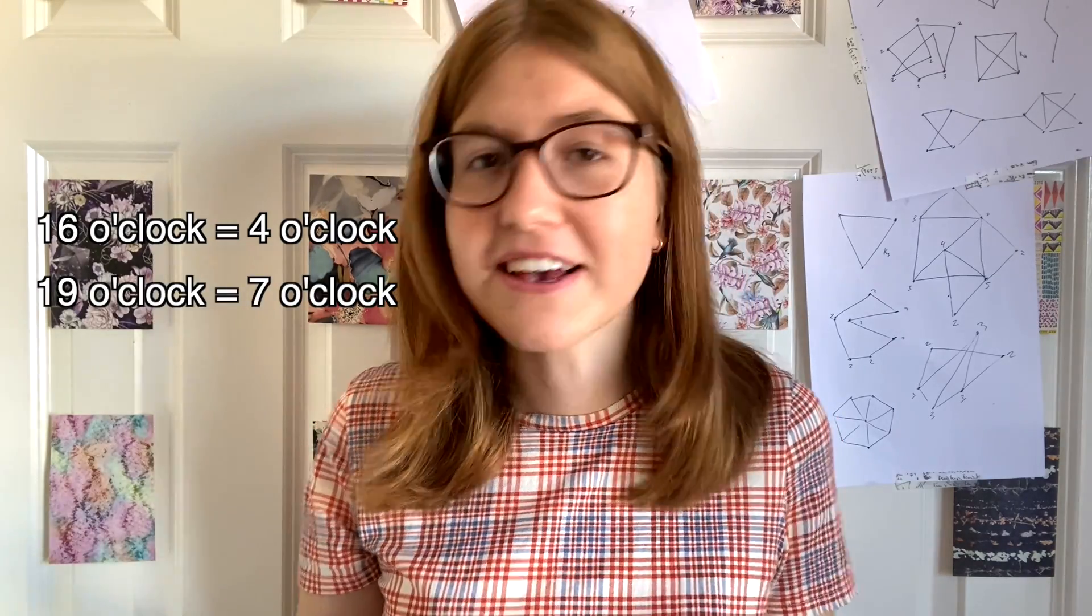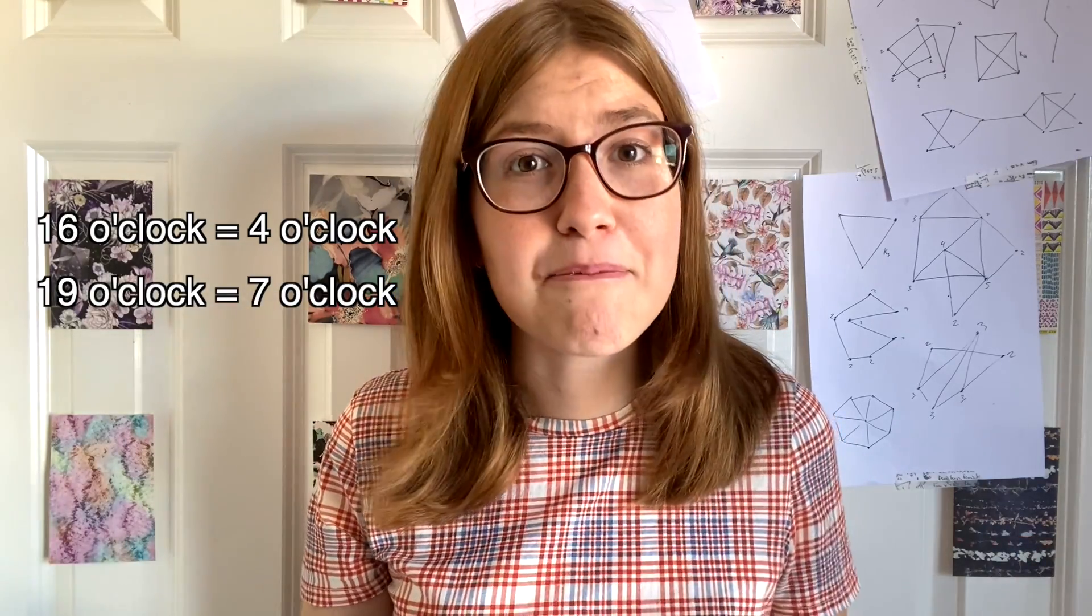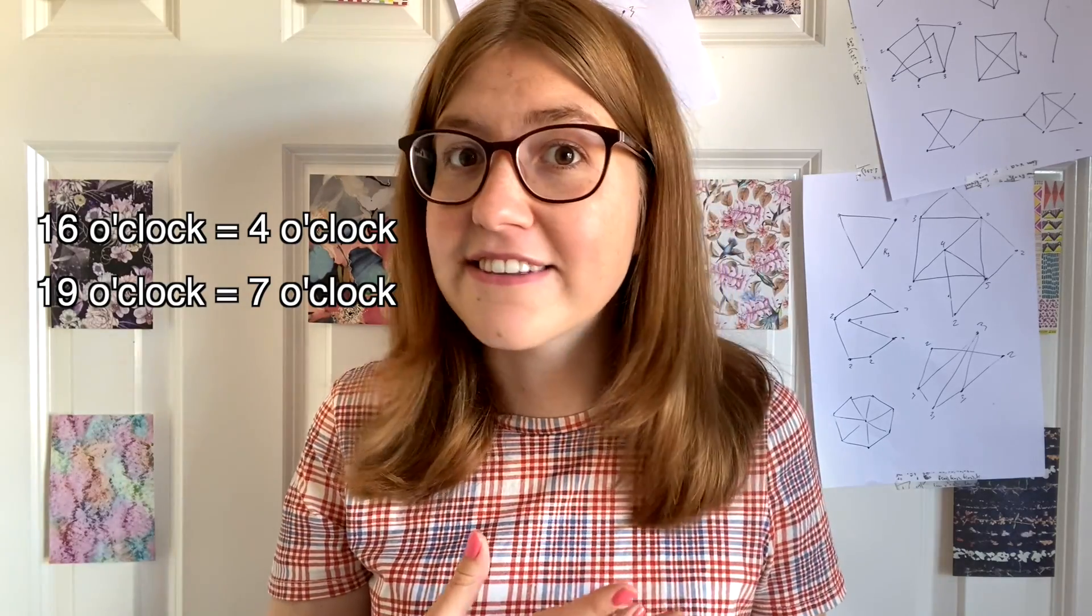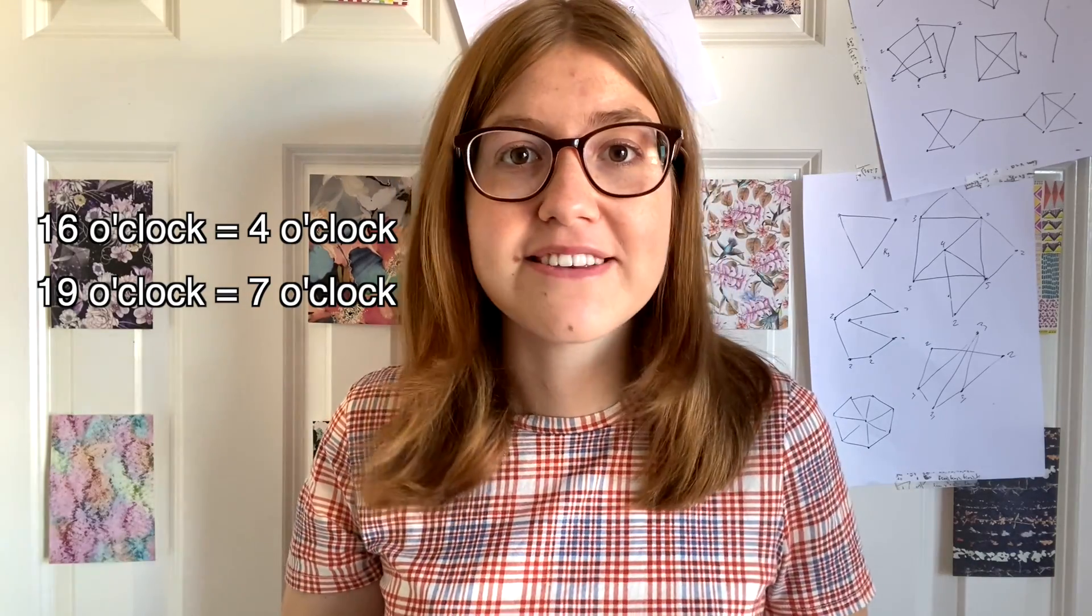So in our world of clocks, 16 and 4 are basically the same thing, as are 19 and 7. To describe this mathematically we say that 16 is congruent to 4 and 19 is congruent to 7, and we write it like this.